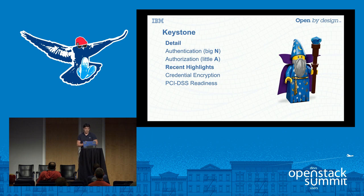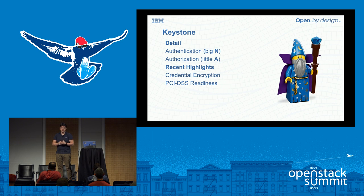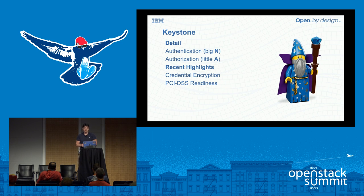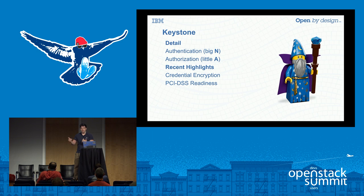To give them their due - Keystone, almost everyone here should know, provides authentication with a big A and authorization with a little a. Keystone provides pretty robust authentication mechanisms. The authorization side - the who is allowed to do what, the user role stuff - is more diverse and a little bit weaker. There are ongoing discussions around dynamic policy. A really interesting highlight is they now have credential encryption at the back end for databases. A real driver for that was work done during this cycle on PCI readiness, bringing OpenStack to a position where deployers can go through PCI DSS with relatively little pain.